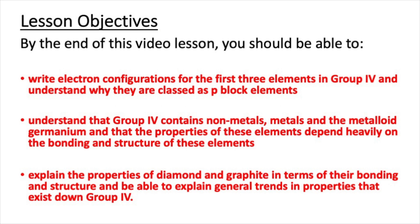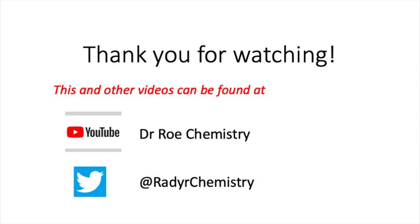That concludes this video lesson. After watching, you should be able to write electron configurations for the first three elements in group 4, understand why they are p-block elements, understand that group 4 contains non-metals, metals and the metalloid germanium, explain the properties of diamond and graphite in terms of bonding and structure, and explain general trends in properties down group 4. Please check out our YouTube channel Dr. Rho Chemistry, which has lots of GCSE, AS and A-level videos, and our Twitter at Radachemistry.